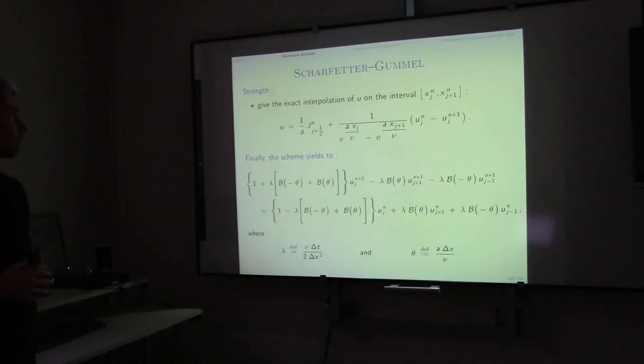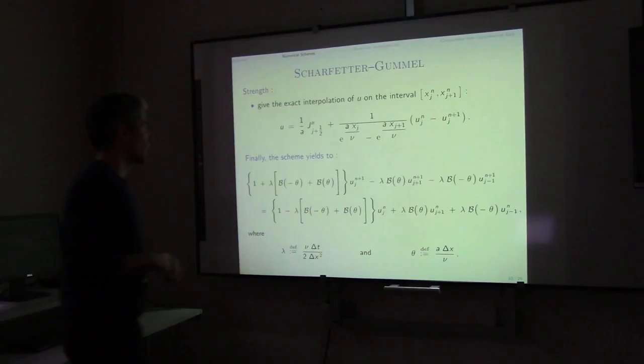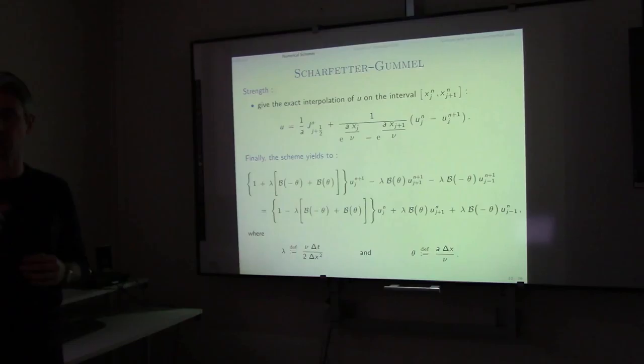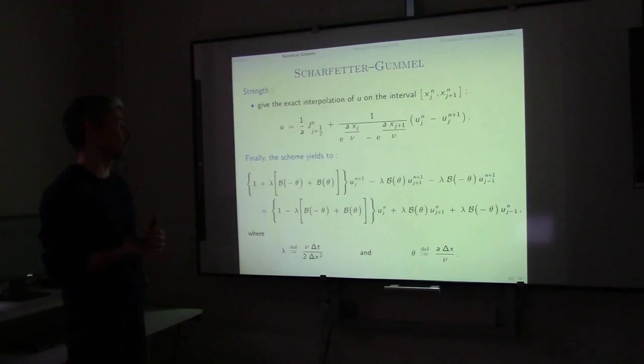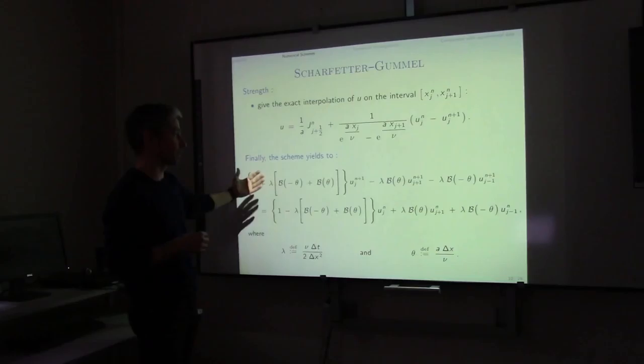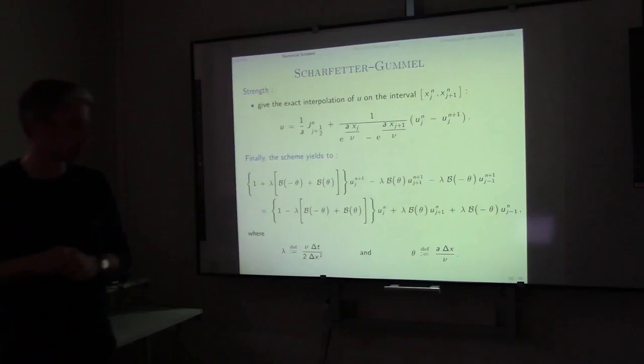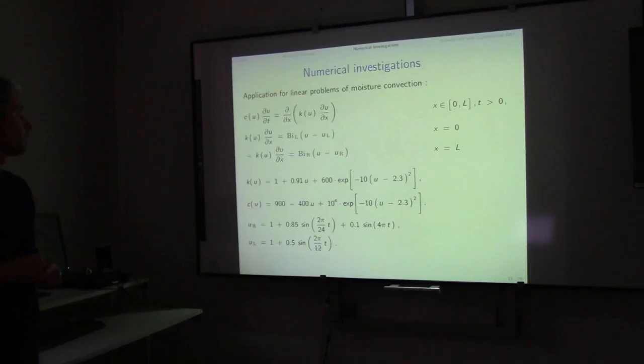A second strength of this scheme is that, due to the BVP we solve, we have an exact interpolation of U on the interval — without making any additional interpolation. The only hypothesis is that the flux is constant on the dual cell. When I introduce the expression for flux J into my discretized equation, I get a scheme that is partly implicit-explicit, depending on the parameters.